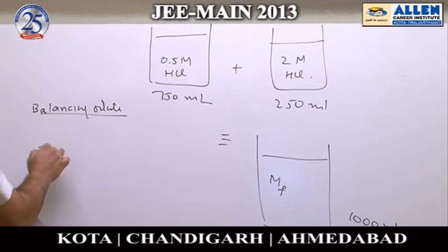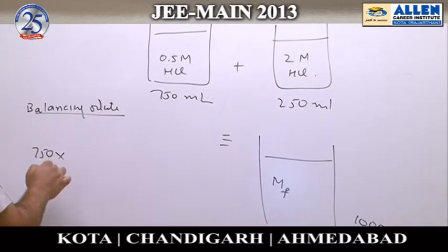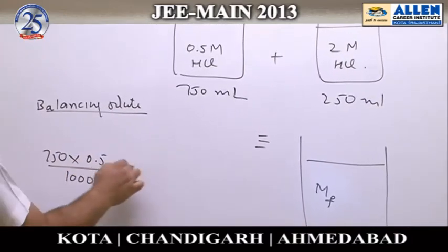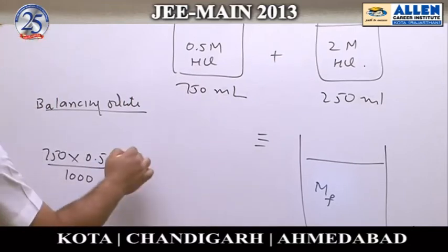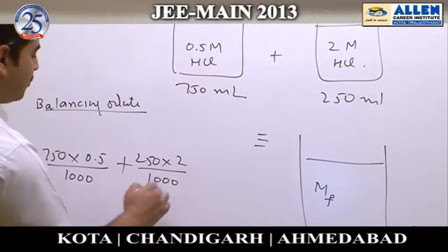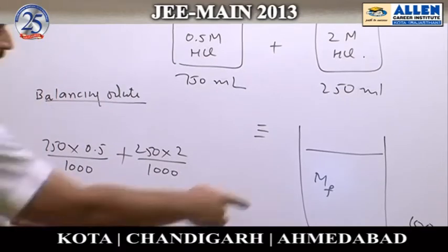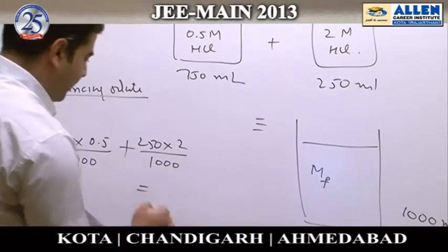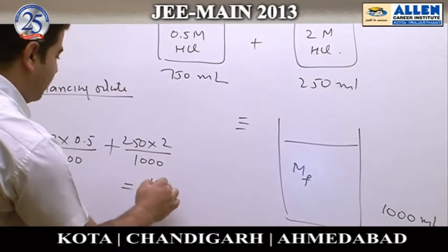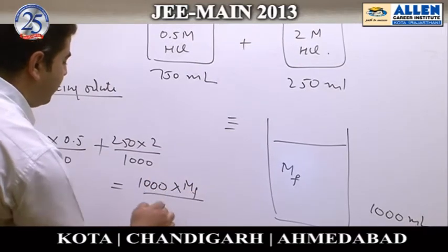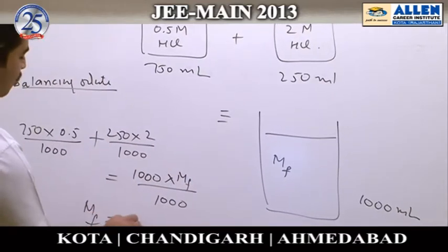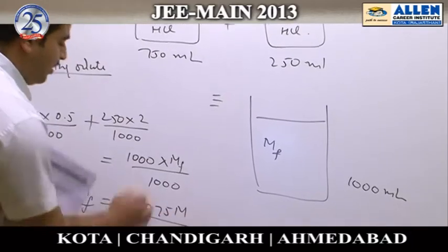The initial moles in the first solution are 750 × 0.5 divided by 1000. The second solution had 250 × 2 divided by 1000 moles. These are balanced with the final moles, which equal 1000 × M final divided by 1000. Solving this equation, M final comes out to be 0.875 molar.